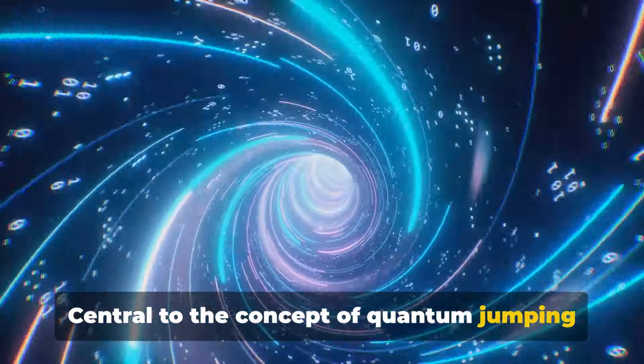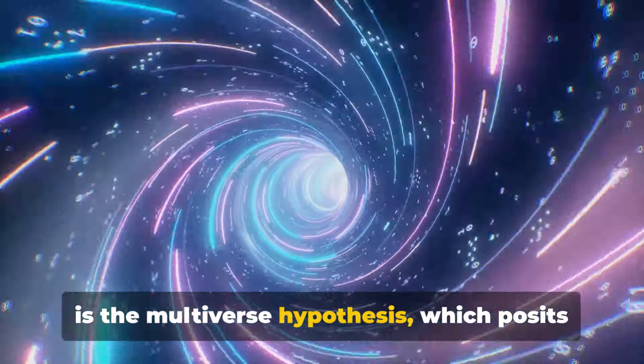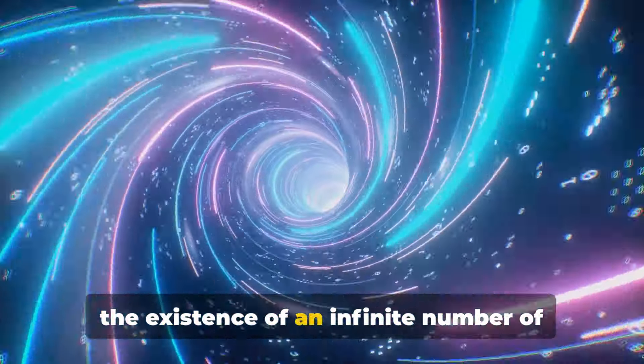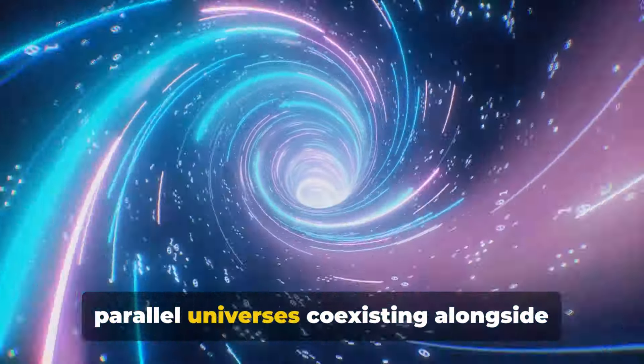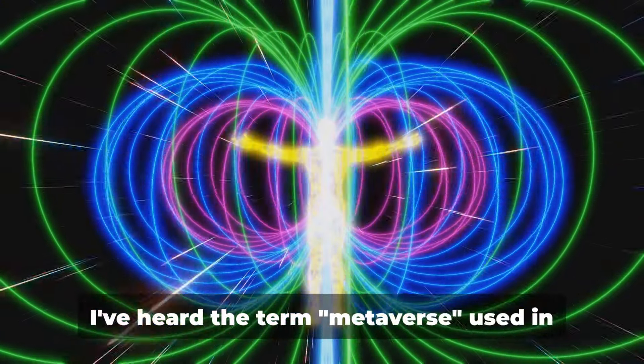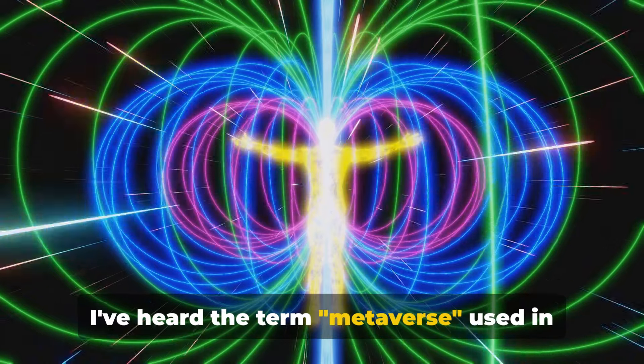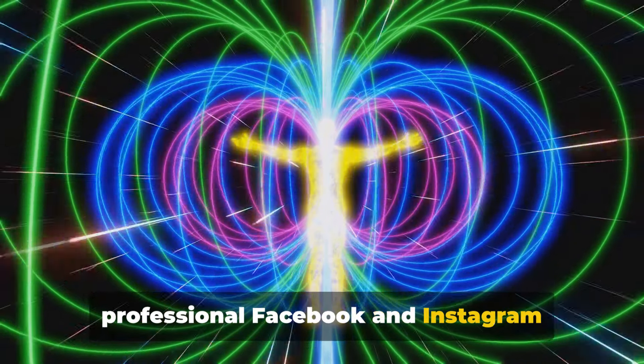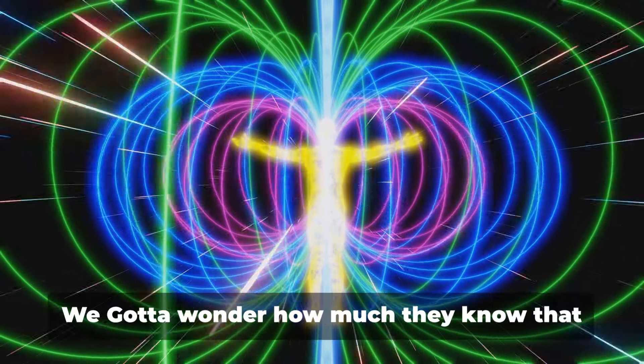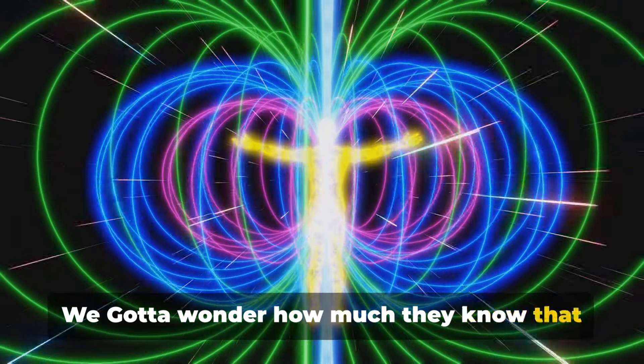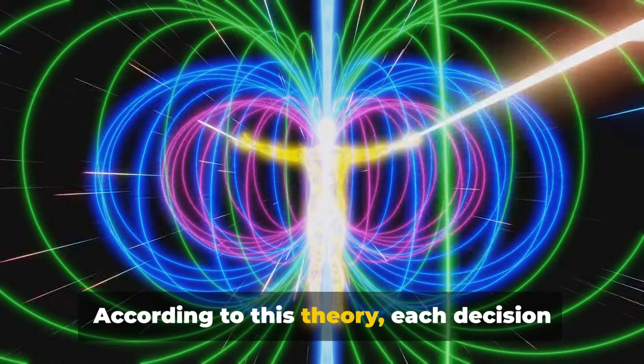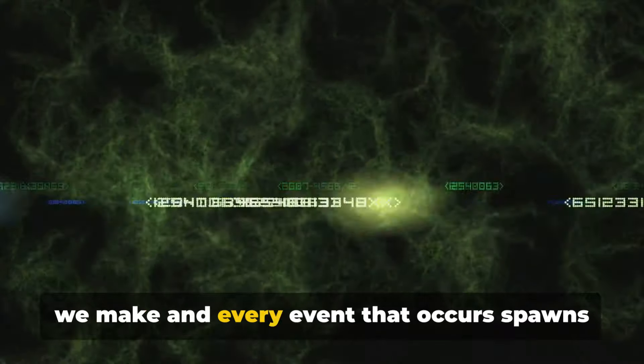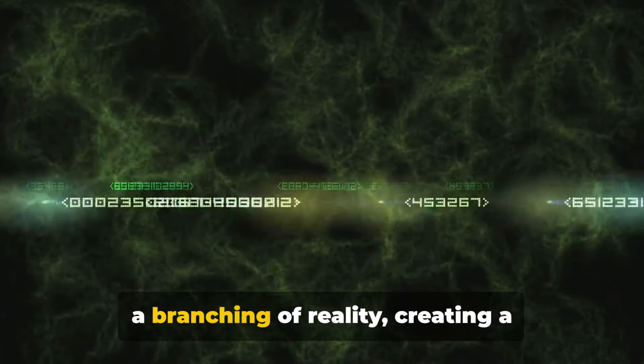Central to the concept of quantum jumping is the multiverse hypothesis, which posits the existence of an infinite number of parallel universes coexisting alongside our own. I've heard the term metaverse used in relationship to Mark Zuckerberg's professional Facebook and Instagram interface known as Meta. We gotta wonder how much they know that we don't. According to this theory, each decision we make and every event that occurs spawns a branching of reality, creating a multitude of parallel timelines where different outcomes unfold.